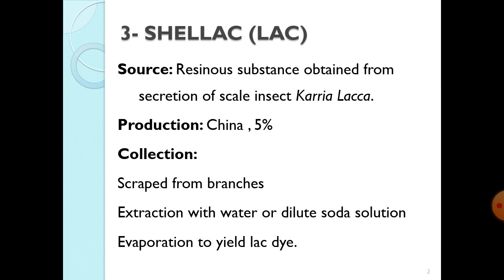The insect is named Caria lacca. This is a secretion deposited on different branches of trees. You can utilize this as a colouring agent. The collection is called shellac, and it is mostly produced commercially in China, which accounts for a large proportion of total world yield.